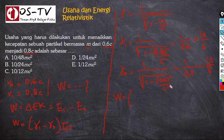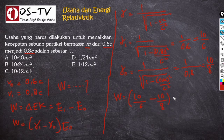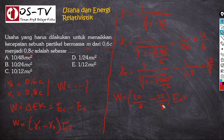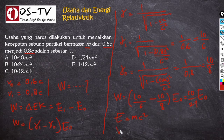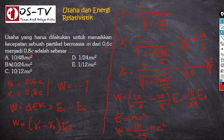Sehingga W = (10/6 − 10/8) × E₀. Kita samakan penyebutnya menjadi 24, sehingga diperoleh 10/24 × E₀. Karena E₀ = MC², maka W = (10/24)MC². Jawaban dari soal ini adalah B.